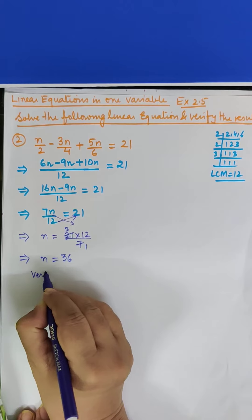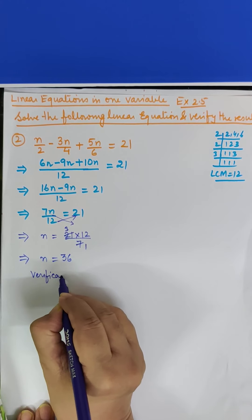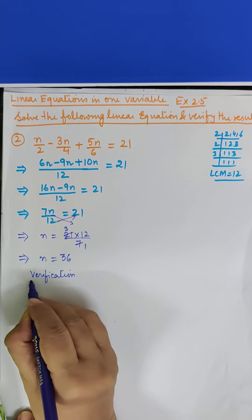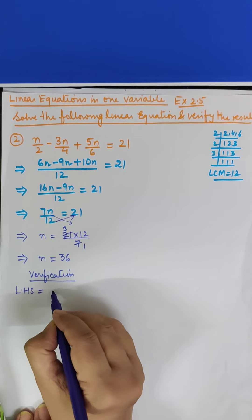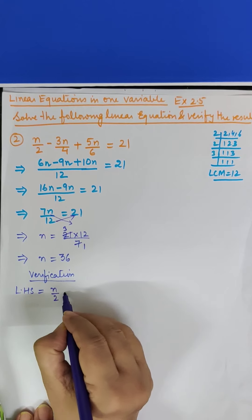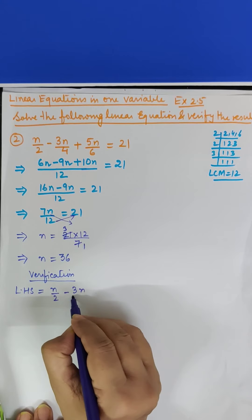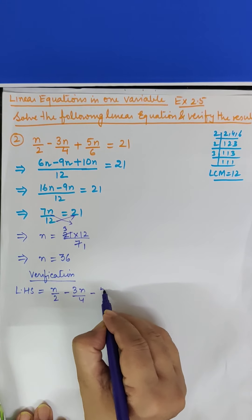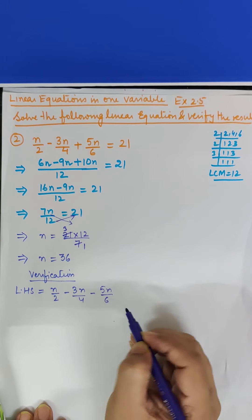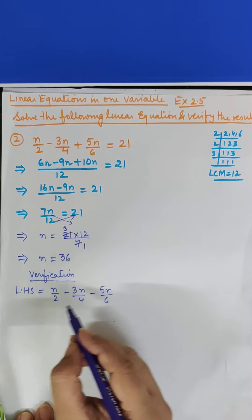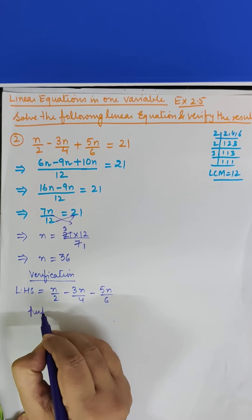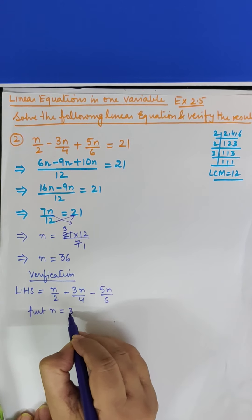Now we will do verification. In verification what is it? LHS is equal to what? N upon 2 minus 3N upon 4 minus 5N upon 6. Now wherever N is written, what do we have to put? 36. We will write put N is equal to 36.